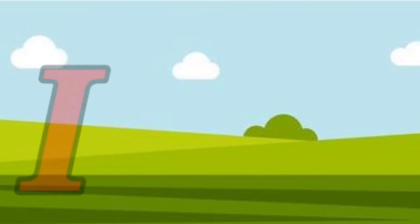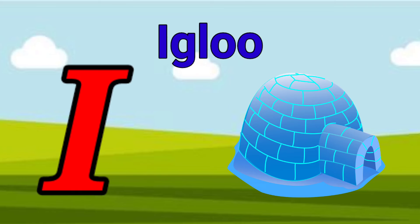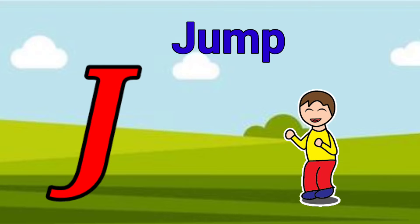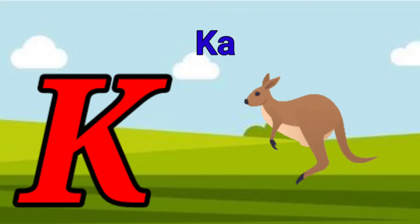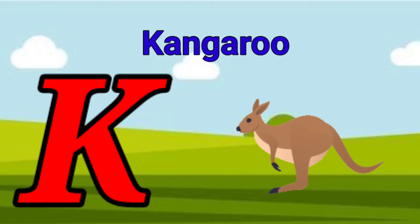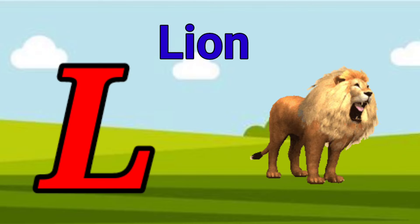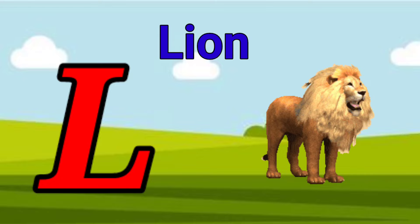I is for igloo, i-i-igloo. J is for jump, j-j-jump. K is for kangaroo, k-k-kangaroo. L is for lion, l-l-lion.